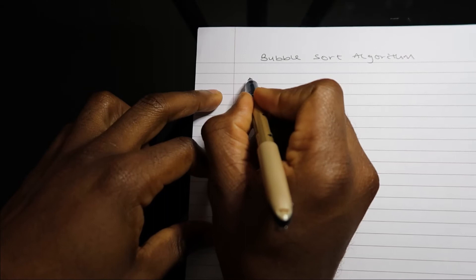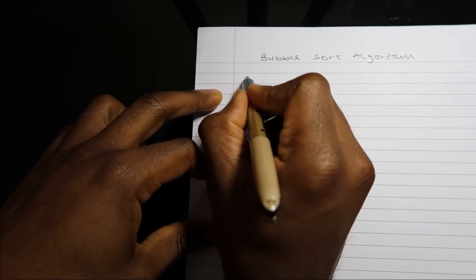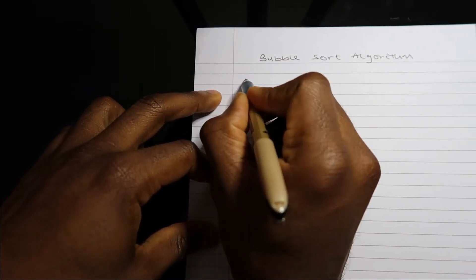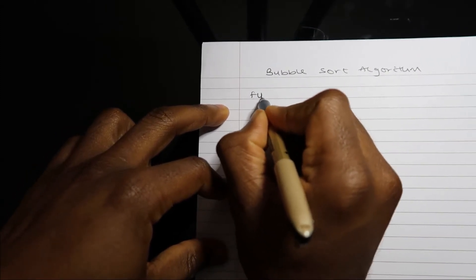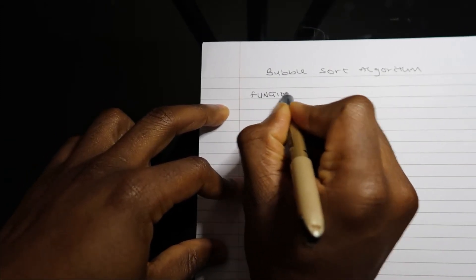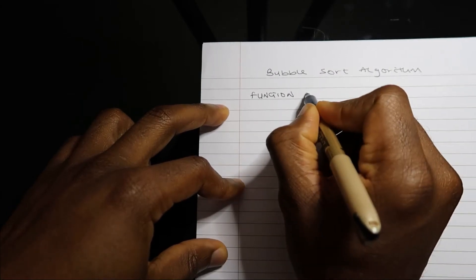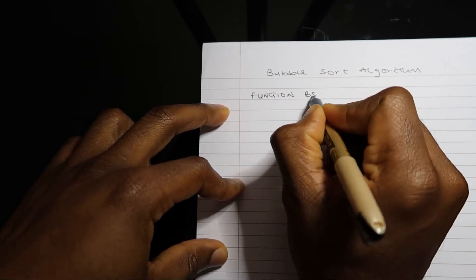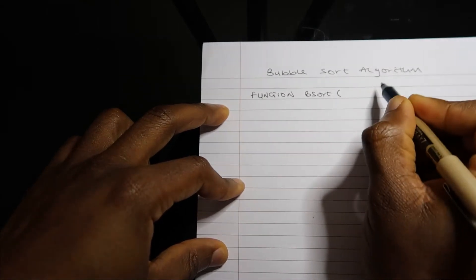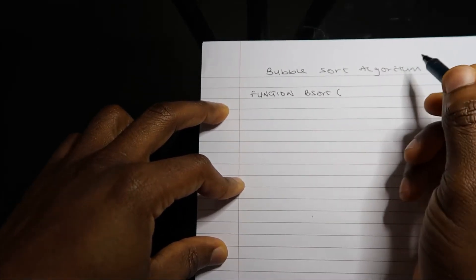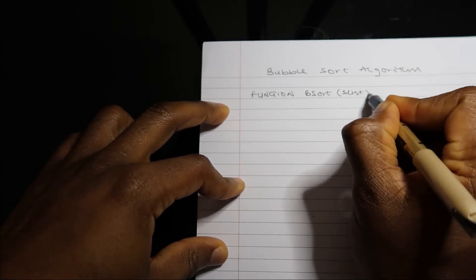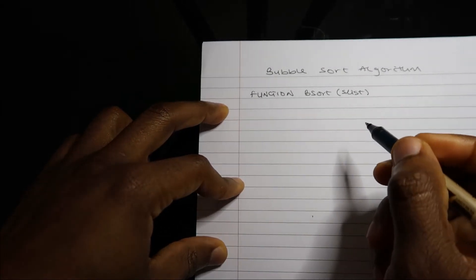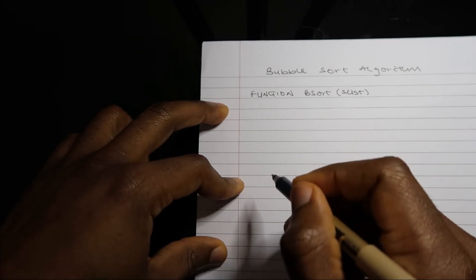To do this, I'm going to start by writing a function. I'll call my function bsort, and my function will take the list I intend to sort, which is slist.